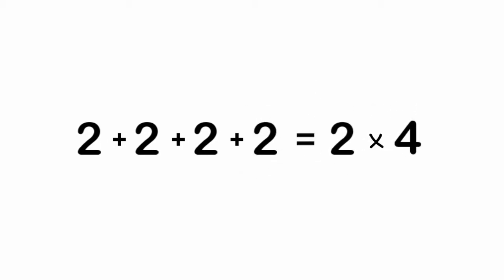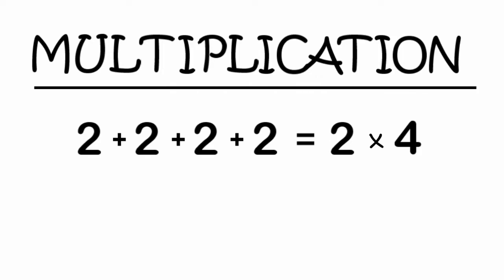We can do 2 plus 2 plus 2 plus 2. We can bundle this as 2 times 4, better known as multiplication. We add 2 to itself 4 times.